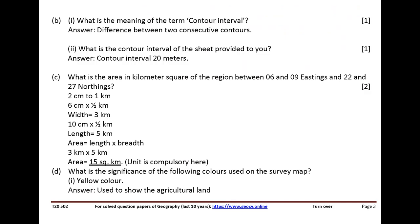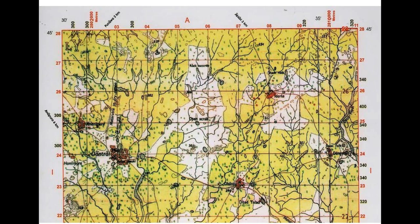What is the meaning of the term contour interval? Answer: difference between two consecutive contours. What is the contour interval of the sheet provided to you? Answer: contour interval is 20 meters.